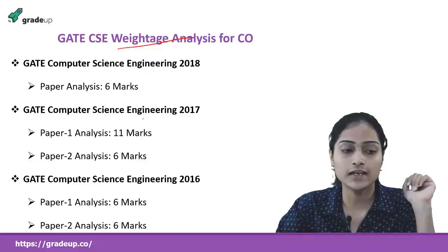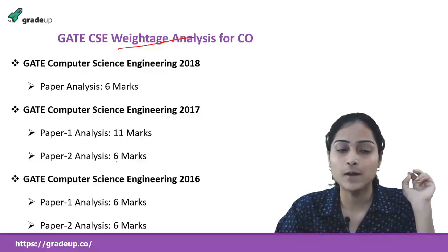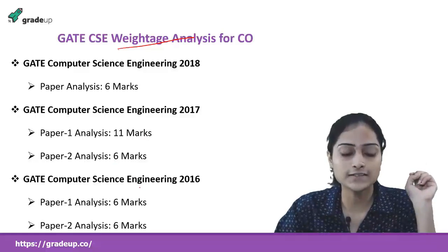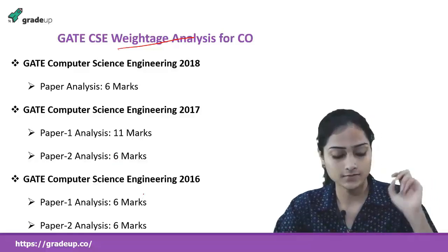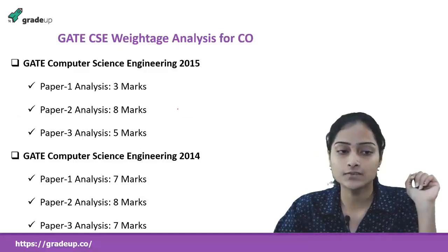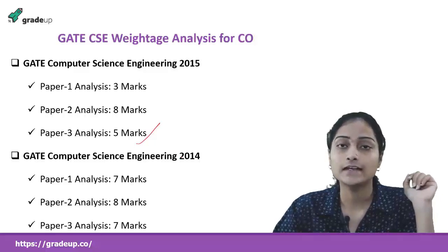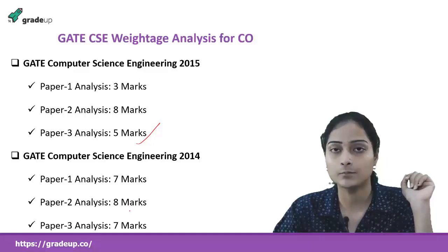In 2017, in Paper 1 it was asked for 11 marks — that is a huge count — and in Paper 2 it was asked for 6 marks. In 2016, in both Paper 1 and Paper 2, it was asked for 6 marks. In 2014, Paper 1 and Paper 3 it was asked for 7 marks, and in Paper 2 it was asked for 8 marks.